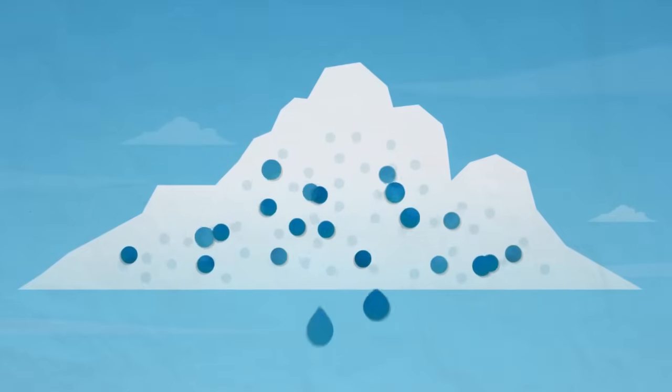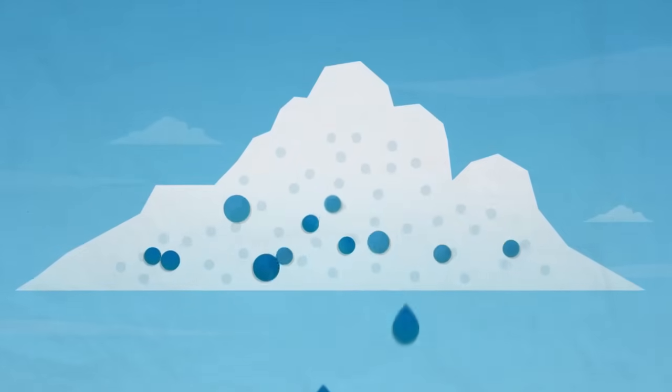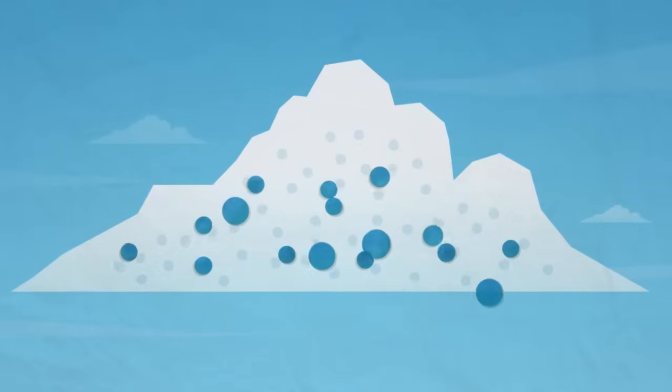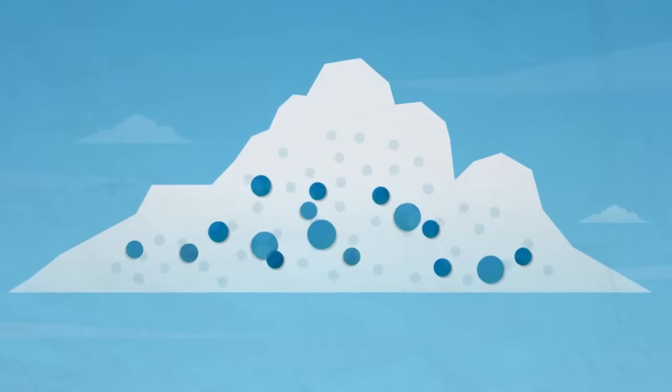They even grow as they bump into one another on their journey from the cloud to the ground. And every single raindrop that reaches the ground is made up of one million of the original tiny water droplets.